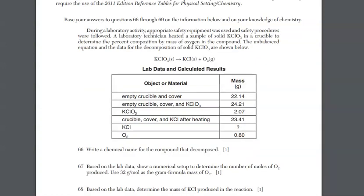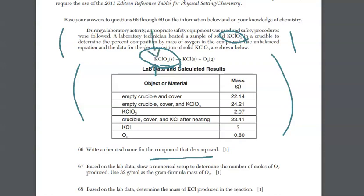What you see is a lot of information here given at the top. Don't forget about this. Along with this data table, question 66 asked you to write the chemical name for the compound that decomposed. We go back up to the top and we learn that a lab technician heated the sample of solid potassium chlorate. We also see that it's a decomposition reaction because you're only starting with one reactant.